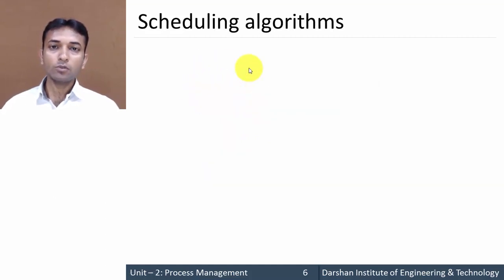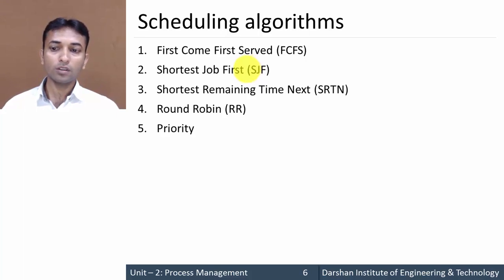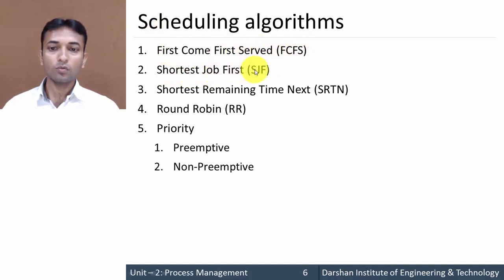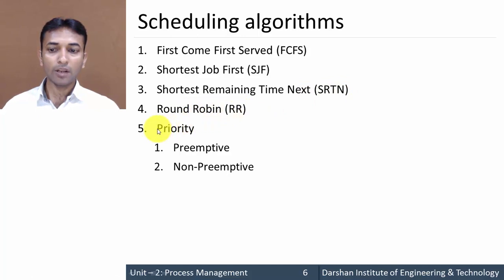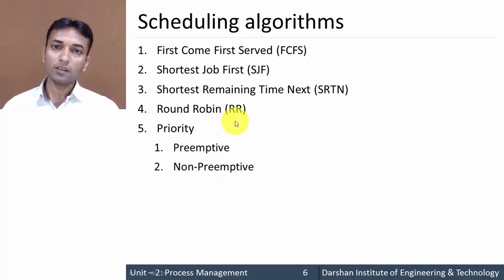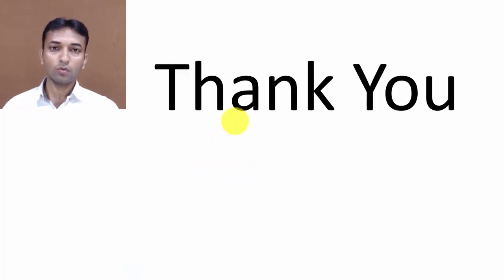Next, we look at different types of scheduling algorithms used in our system: First Come First Serve (FCFS), Shortest Job First (SJF), Shortest Remaining Time Next (SRTN), Round Robin (RR), and Priority scheduling — both preemptive and non-preemptive. We will see each of these algorithms in detail in the next videos. Thank you very much.